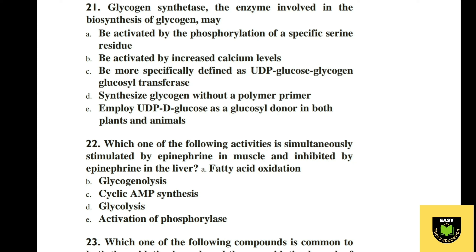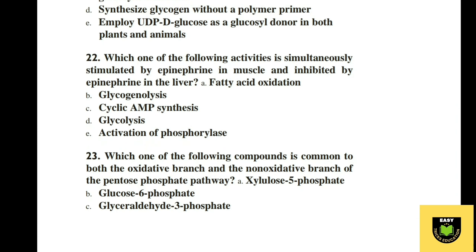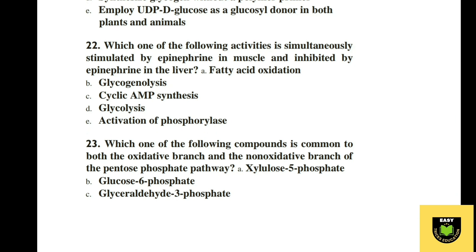Question 21. Glycogen synthase, the enzyme involved in the biosynthesis of glycogen, may: A be activated by phosphorylation of a specific serine residue, B be deactivated by increased calcium level, C be more specifically defined as UDP-glucose:glycogen glucosyl transferase, D synthesize glycogen without a polymer primer, E utilize UDP-glucose as a glycosyl donor in both plants and animals. The correct option is C, UDP-glucose:glycogen glucosyl transferase.